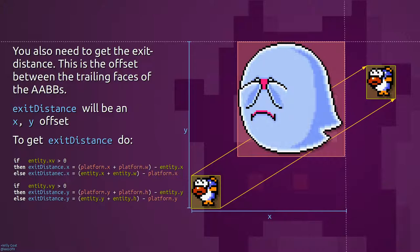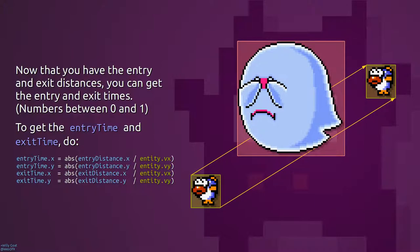The same rules apply for the y-axis. Now you need to get the exit distances. These are the same as the entry distances, except it's the faces that are facing away from the collision. Now that you have the entry and exit distances, you can get the entry and exit times. These are a number between 0 and 1, and you get them by dividing the distance by the velocity. The number also needs to be positive, so you take the absolute value of that.